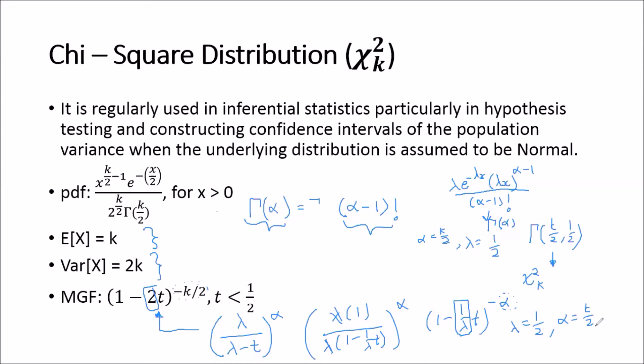That shows the link between the gamma distribution and the chi-squared distribution. I will give more formal proofs for the moment-generating function, expected value, and variance in a later video. The chi-squared distribution is also used extensively in the chi-squared goodness-of-fit test, where we test the differences between observed data and what we expected under a certain set of assumptions.